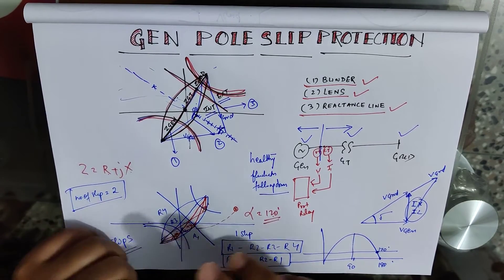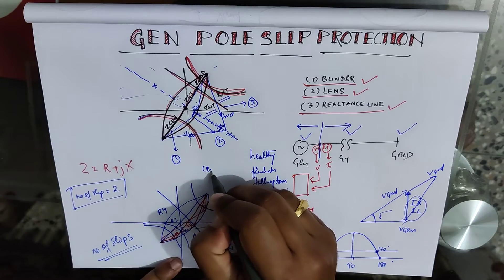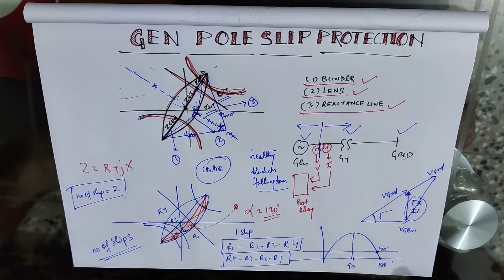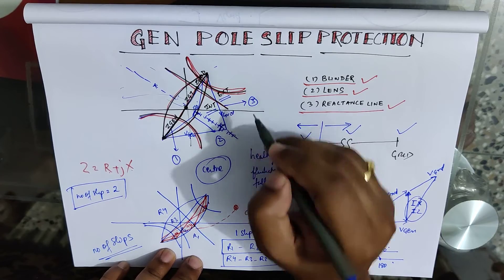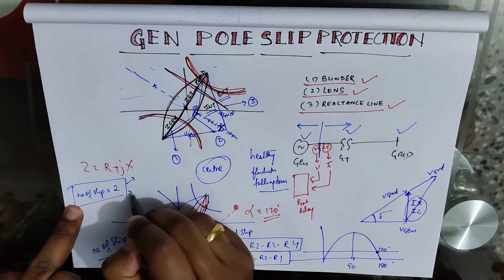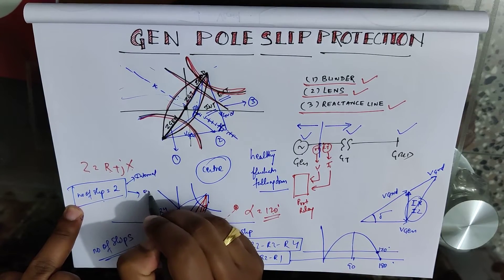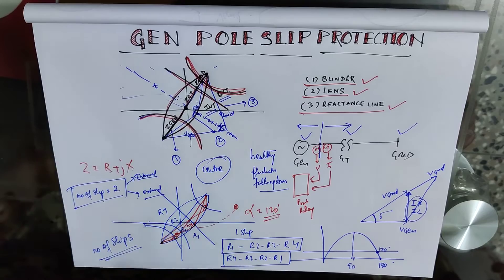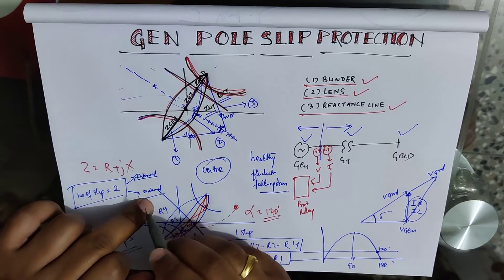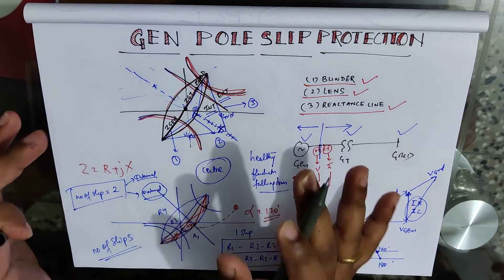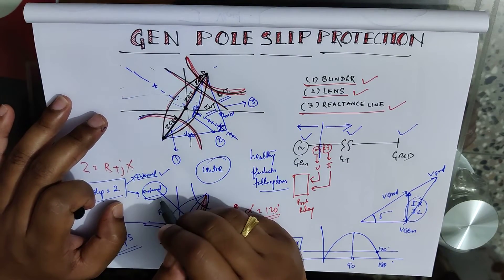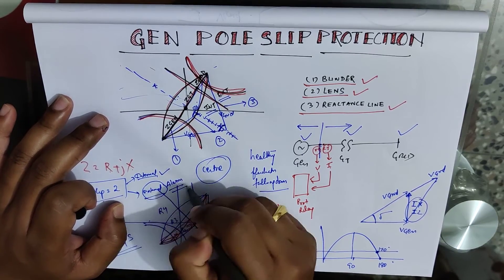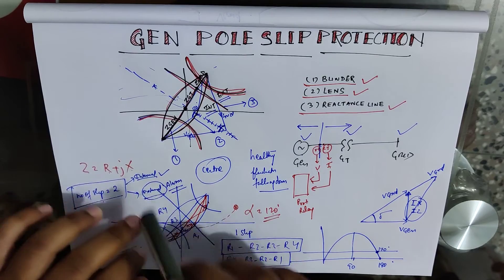The relay can also distinguish the center of the swing — it distinguishes using the reactance line. The settings are divided into two parts: internal slip setting and external slip setting. It is not recommended to trip on external slip; you should only trip the generator on internal slip. The external slip setting can be kept for alarm purposes only.